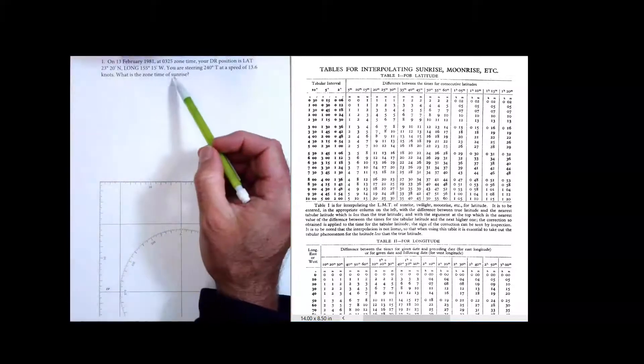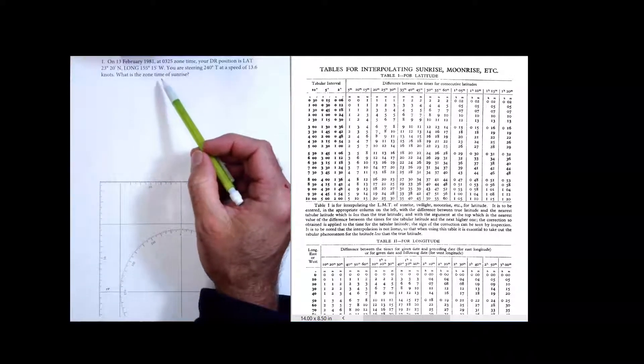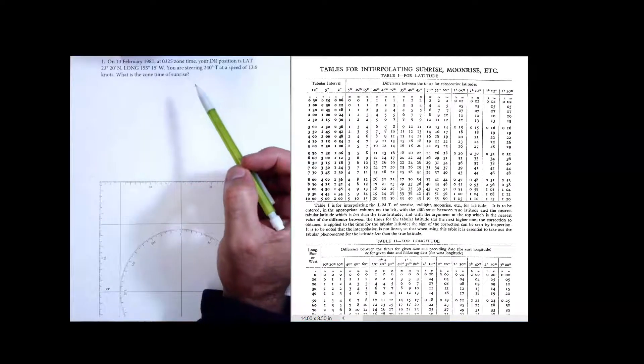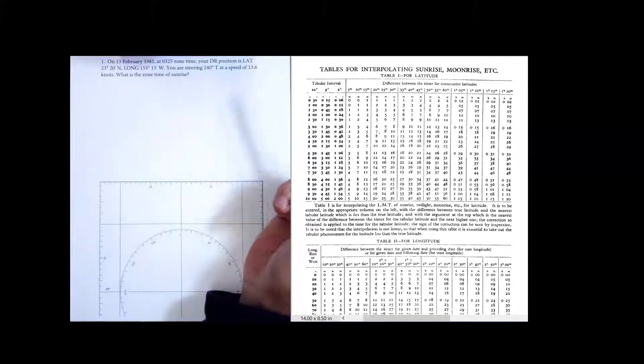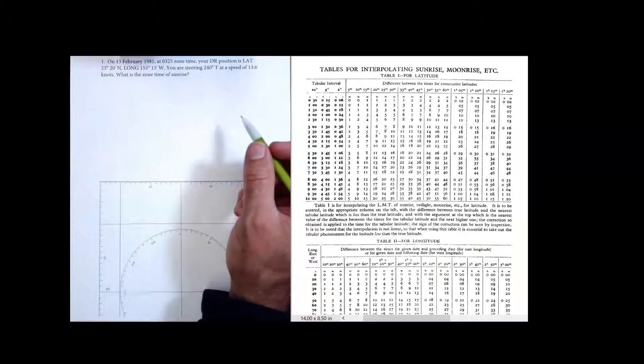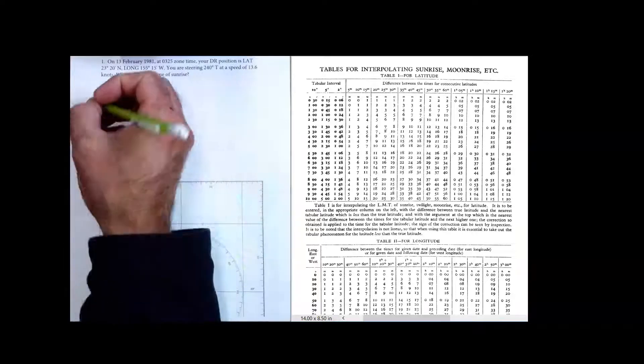In this video, we're going to do this problem right here, which is a pre-calculation of the time of sunrise. And this same method would be used for sunset, you just use a different column. So we're going to do this in three steps.